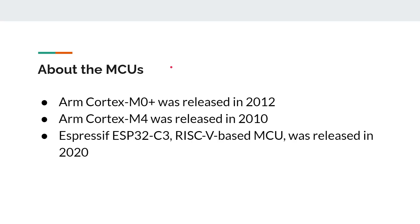A bit of historical context: the ARM Cortex M0 Plus was released in 2012, so that's a decade ago. The ARM Cortex M4 was released in 2010, so that's over 12 years ago. The Espressif RISC-V based chip we're looking at was released in 2020. There is a historical battle going on here — these ARM Cortex chips have been out for a long time. The question is, can the new RISC-V chips do battle with these well-established, mature, and proven Cortex M chips?